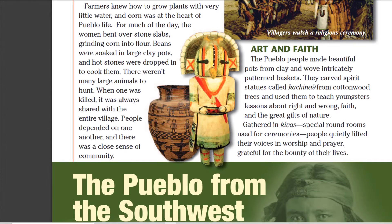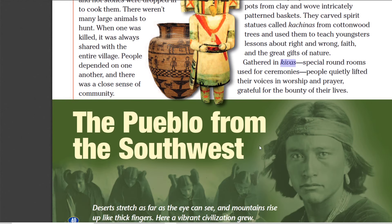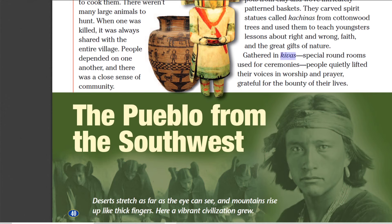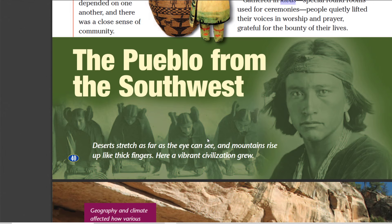They were also very religious people. You can see here there's a kachina that they used — it's kind of like a puppet to help teach children how to behave. And they celebrated their ceremonies and religious activities in kivas, which were kind of like theater rooms, where they would go in and sing and worship and so forth.